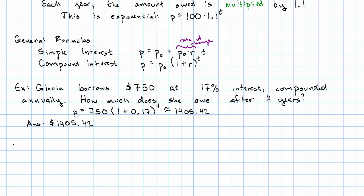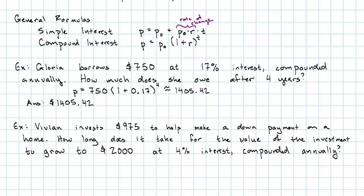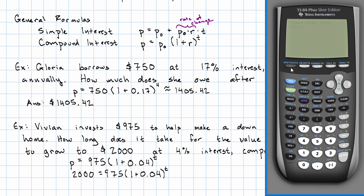We could also ask questions about the time. Suppose Vivian invests $975 to help her make a down payment on a home. How long does it take for the value of the investment to grow to $2,000 at 4% interest compounded annually? So, the value of the investment is 975 times 1 plus 0.04 to the power of the number of years. We want to find out what is t when p is 2,000. Again, we'll use the table function on our calculator. So, y equals 975 times 1 plus 0.04 to the x power.